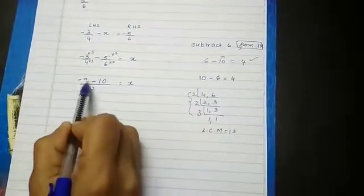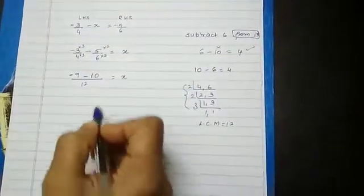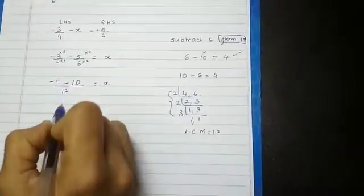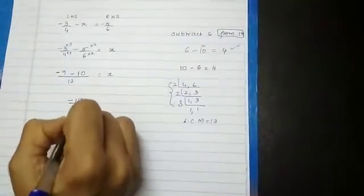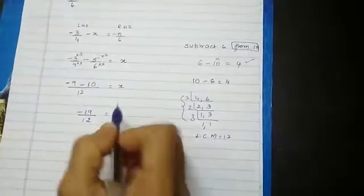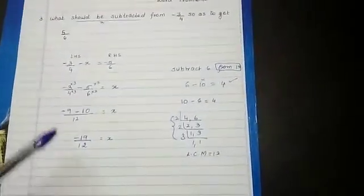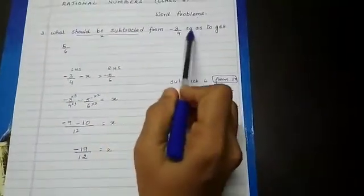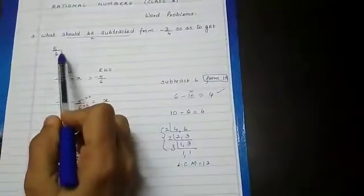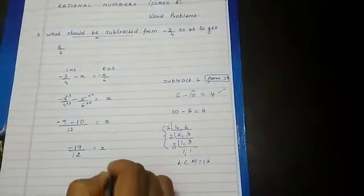So if both are minus, that means we have to add. So minus 9 minus 10 will give you minus 19 by 12 is equal to x. That means minus 19 by 12 should be subtracted from minus 3 by 4 to get 5 by 6. Hope you understood children.